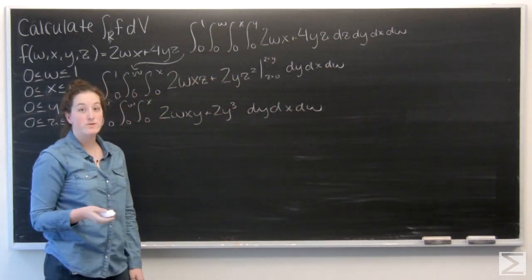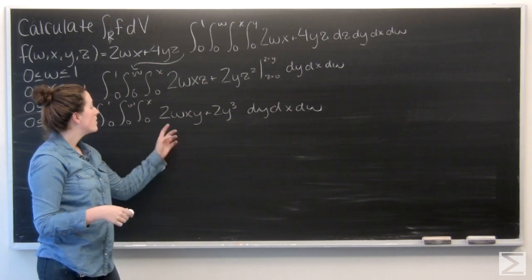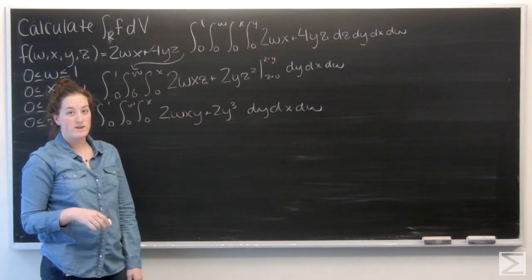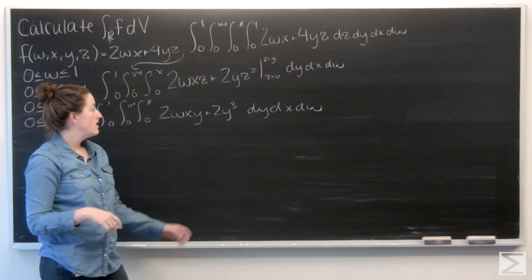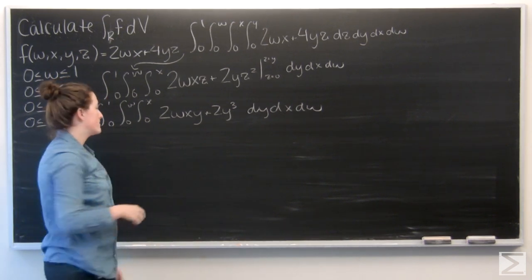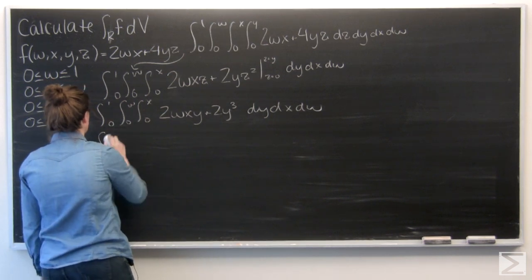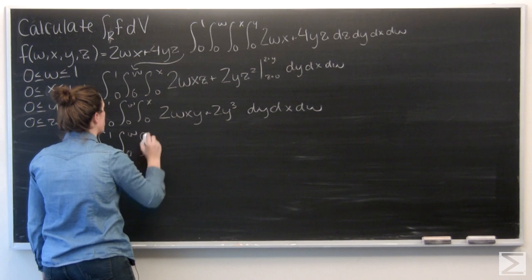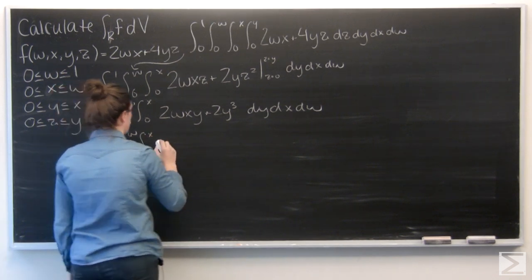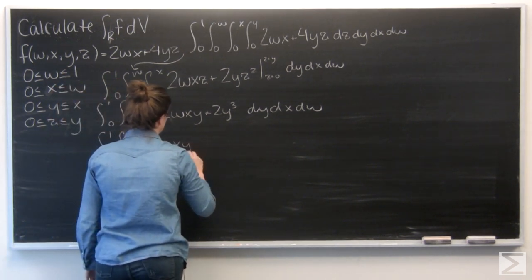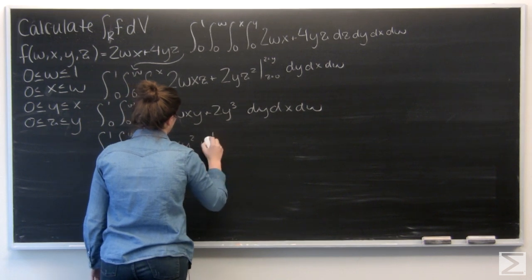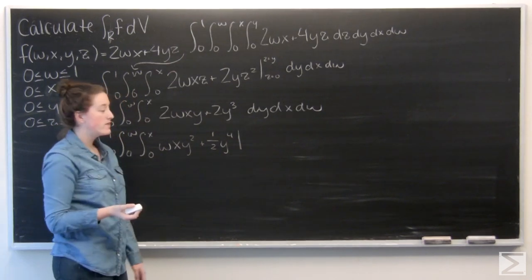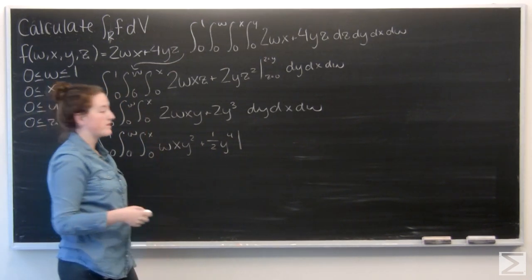And next up I'm integrating with respect to y. So both of these are a function of y. 2wxy becomes wxy squared. And 2y to the third becomes 1 half y to the fourth. And now I want to evaluate from y equals 0 to y equals x.